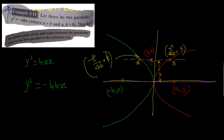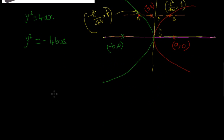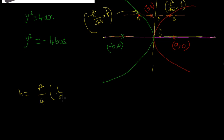Now find the middle point (h, k). The x-coordinate of the midpoint h equals (t²/4a + (-t²/4b)) / 2, which simplifies to (t²/8)(1/a - 1/b). The y-coordinate k equals (t + t) / 2 = t.